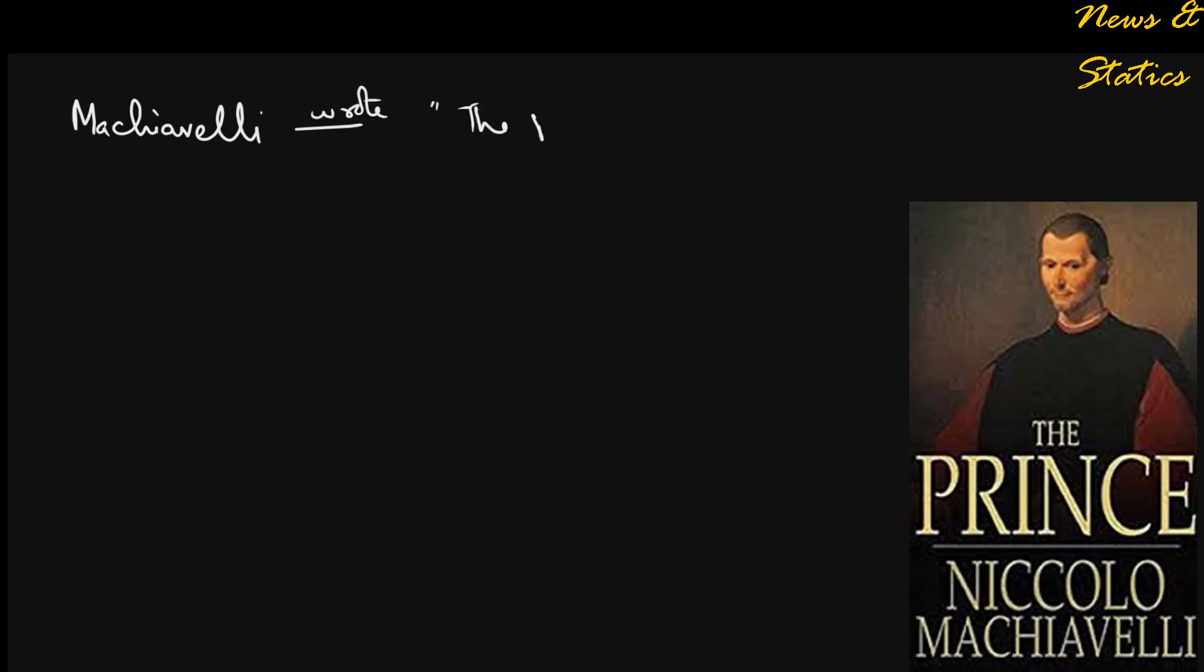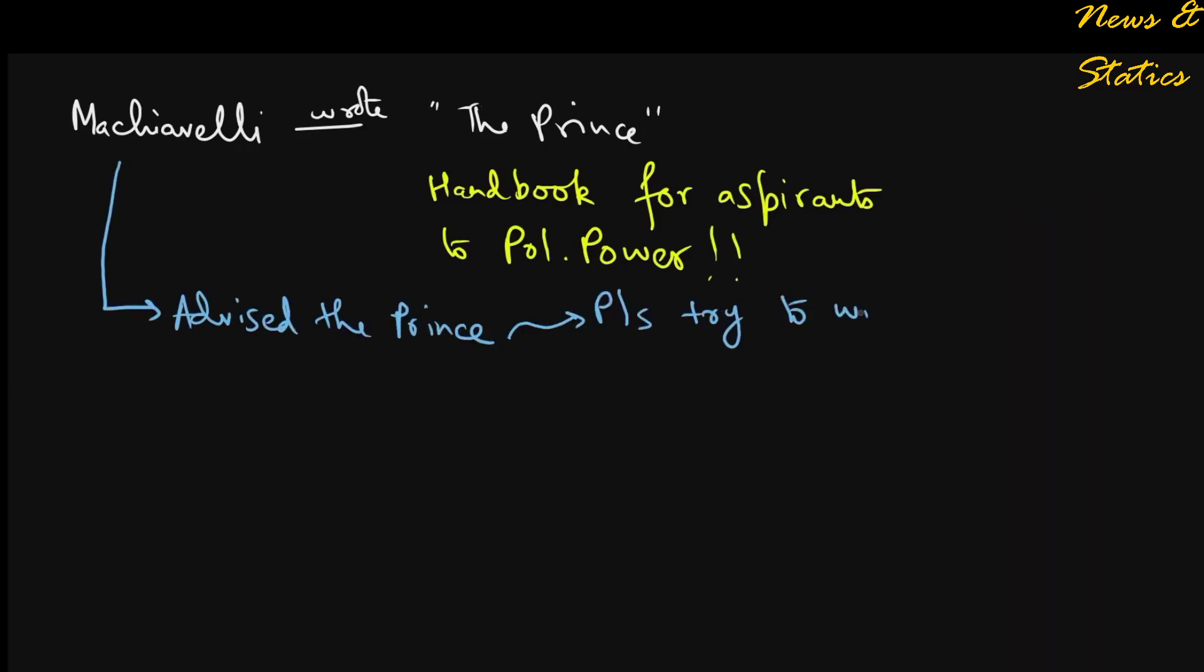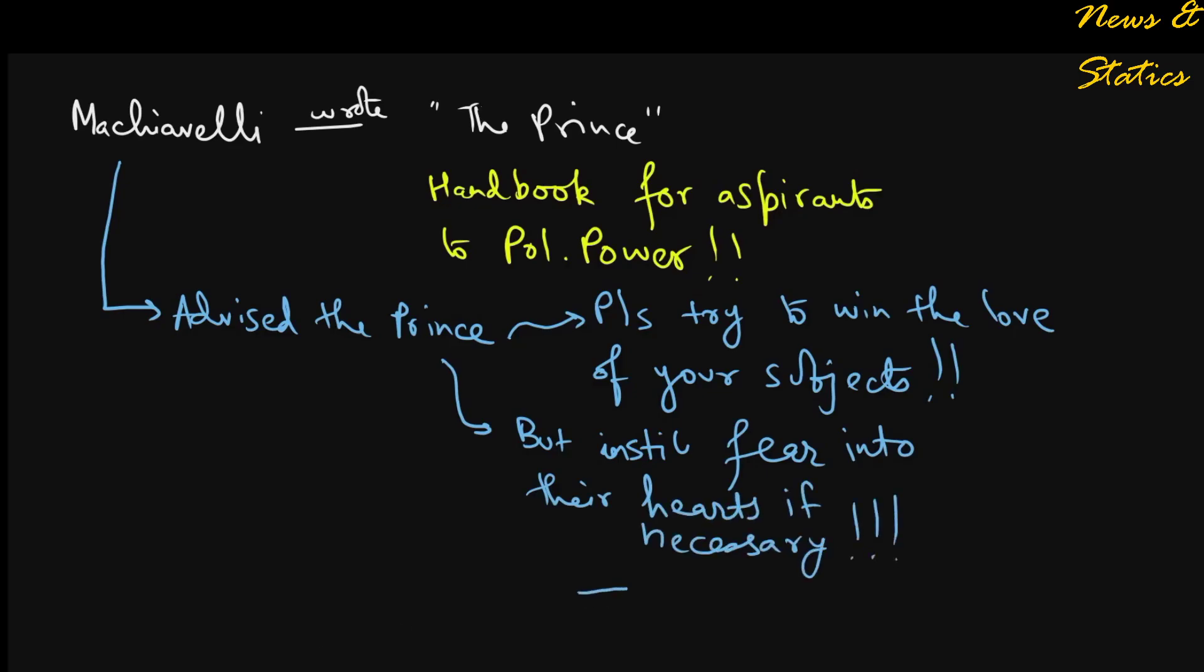Machiavelli's book The Prince is considered as a handbook for aspirants to political power. It is here that Machiavelli advised princes to contrive some way to win the love of his subjects, but not at the cost of losing the opportunity to instill fear in them, for they will love at their own will but fear at the will of the prince.